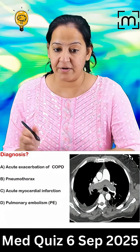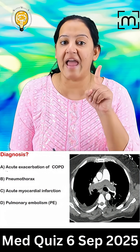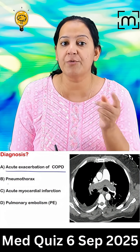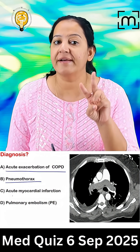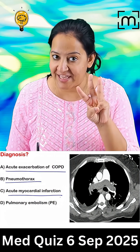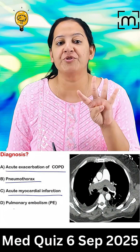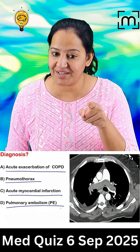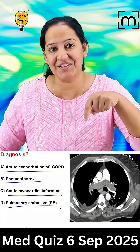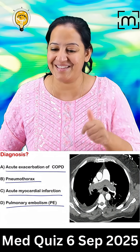Now what is the diagnosis? Your options are: option A, acute exacerbation of COPD; option B, pneumothorax; option C, acute MI; or option D, pulmonary embolism. If you know the correct answer, post it in the comments below. Thank you.